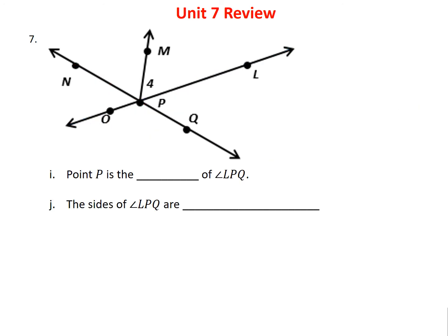Problem 7I asks: what is point P in angle LPQ? Point P is right at the corner of the angle — that's called the vertex. The sides of angle LPQ are called rays, and they start at P and go outward in both directions.